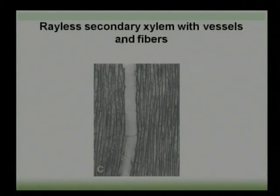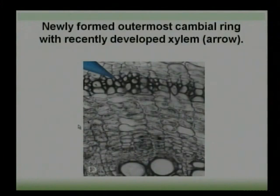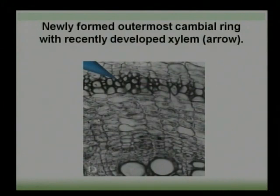These are slides related to the abnormal secondary growth. In Borhevia diffusa, the xylem is present with vessels and fibre. The blue arrow shows the newly formed outermost cambium ring, because the abnormal secondary growth in Borhevia diffusa is only due to the formation of extra cambium rings. The arrow shows cambium rings with recently developed xylem.